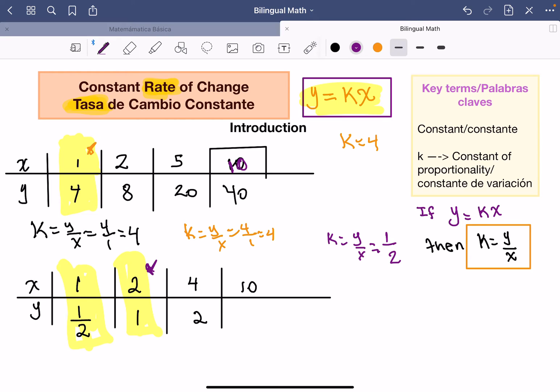So that means my k, my k in this case is going to be 1 half. So now that I have my 1 half, you can actually check with the other numbers. You can check with this. So 2 over 4, 2 over 4, which is 1 half. So it's the same.